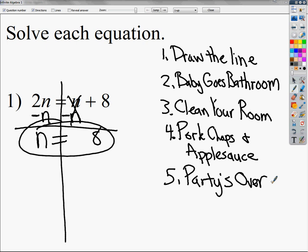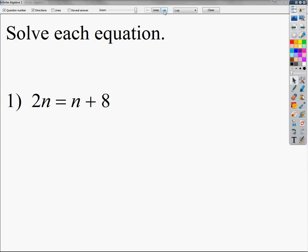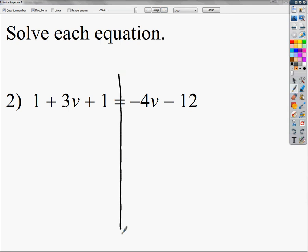And the last step is, of course, finish it. In this problem, pork chops and applesauce pretty much finished it. Because once you moved it, you got n is equal to 8. So let's look at another problem related to this same exact topic. So I'm going to clear all this off real fast, skip to the next problem. This one's a bit longer. So steps still apply. First step is draw your line. Since we're not doing the distributive property, there's no baby goes bathroom. But there is a clean your room.